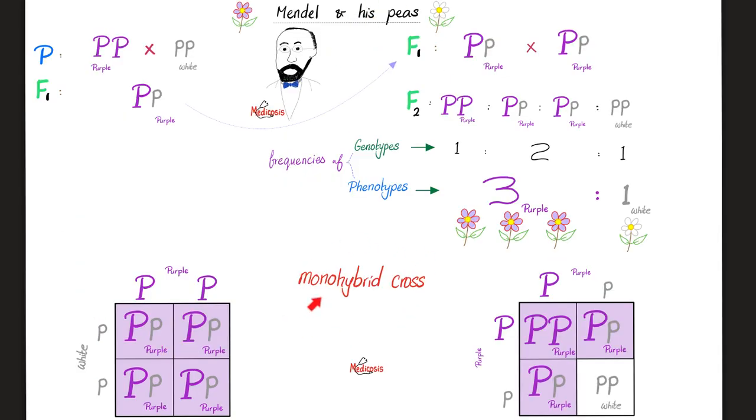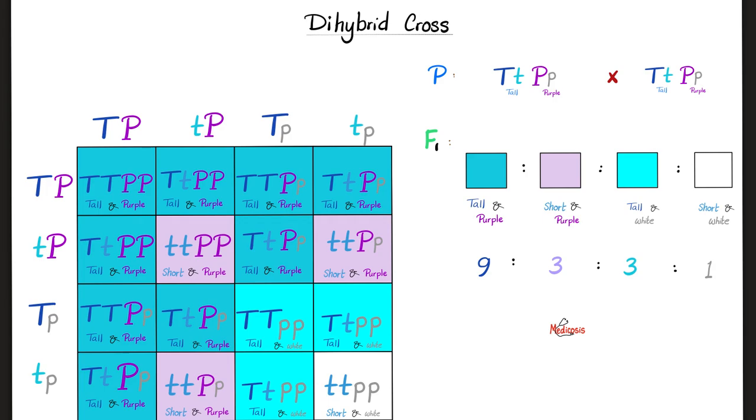Now contrast that with the monohybrid cross. If you remember, this is the second generation ratio. 3 to 1. But in dihybrid cross, this is what you get. 9 to 3 to 3 to 1.